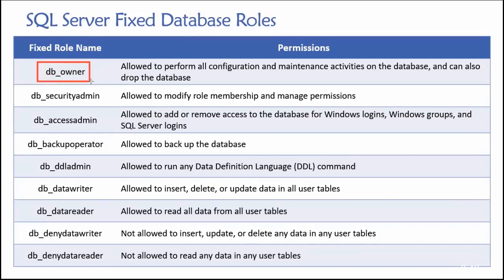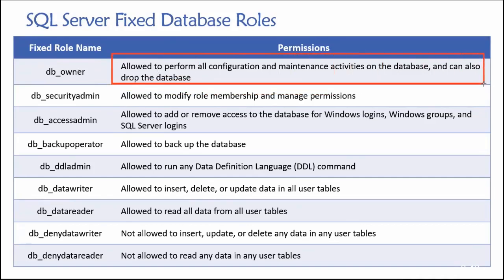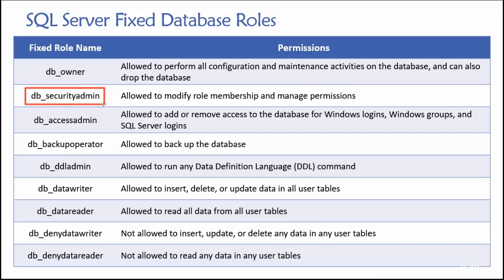Let's take a look at some of the fixed roles. The DB owner has a very high level of access to the database — not as high as a system administrator, but for an individual database, anyone assigned to that role can basically do whatever they want: all configuration and maintenance activities, they can drop the database, delete all the data, delete the tables, get rid of the entire database. We also have a role for people that are allowed to administer permissions. On a large corporation, there may be several people that can assign and manage permissions; if we have thousands of employees, we probably need at least a few people with security admin-level privileges.